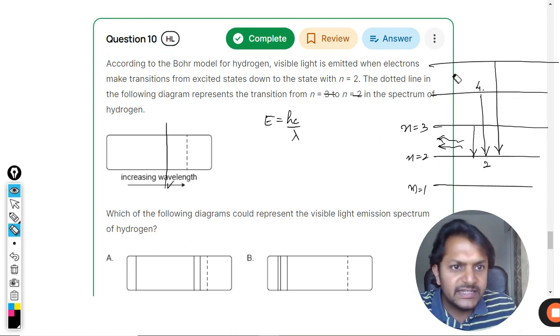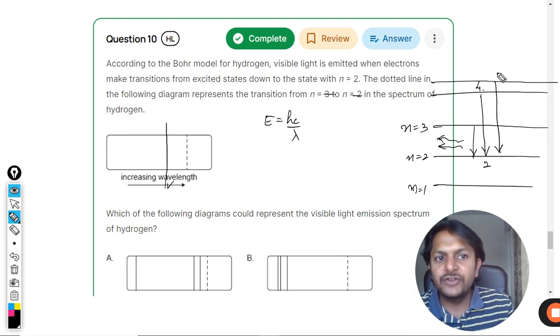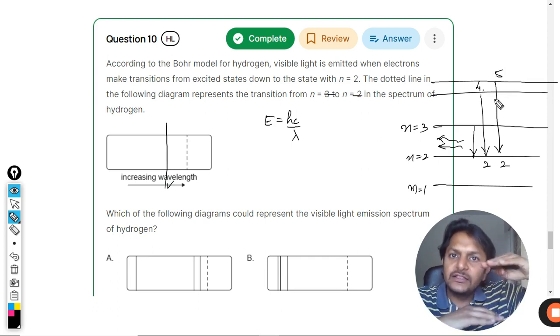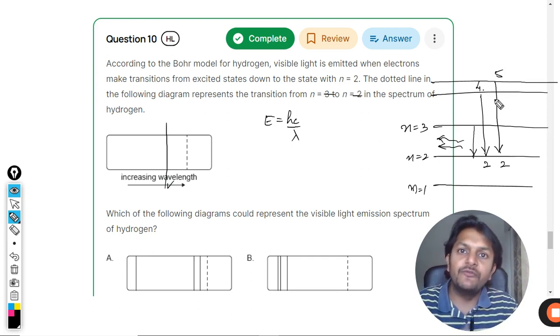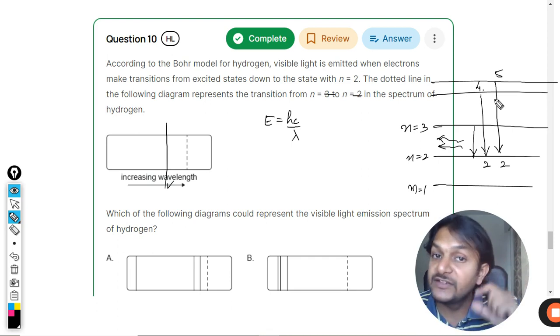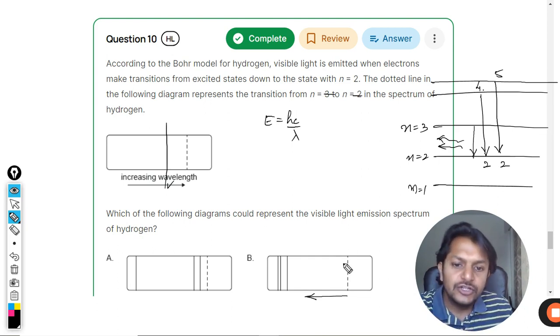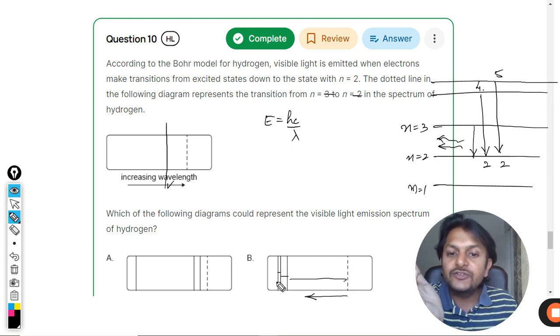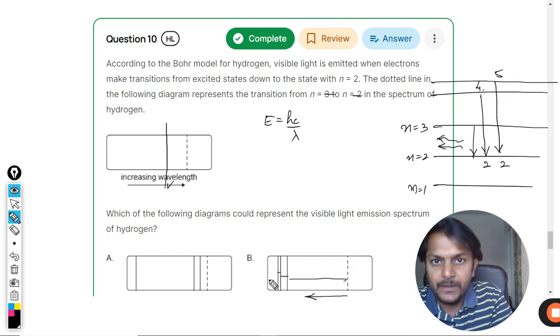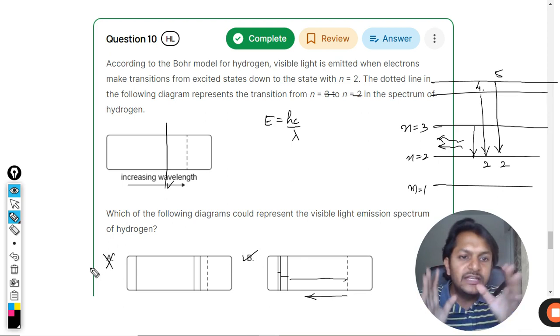Now let us think more. This gap keeps on reducing—the fifth shell is near to the fourth shell. When making a transition from five to two, the difference in energy gap between four-to-two and five-to-two is very small. It means that farther you go, the gap should keep decreasing. So the first gap is big, then a very small gap, then even smaller, and for the next one even smaller.